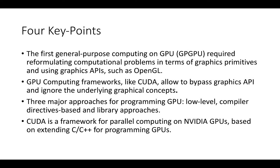There are four main points to take with you after this lecture. First, general-purpose computing on GPU — GPGPU — required reformulating computational problems in terms of graphics primitives and using graphics APIs. Second, since 2006 GPU computing frameworks allow us to go beyond GPGPU by bypassing graphics APIs and ignoring the underlying graphical concepts. Third, there are three major approaches for programming GPUs: low-level, compiler directives, and library approaches. Finally, CUDA is a framework for parallel computing on NVIDIA GPUs based on extending C and C++, and it's the framework we will be using in this course.